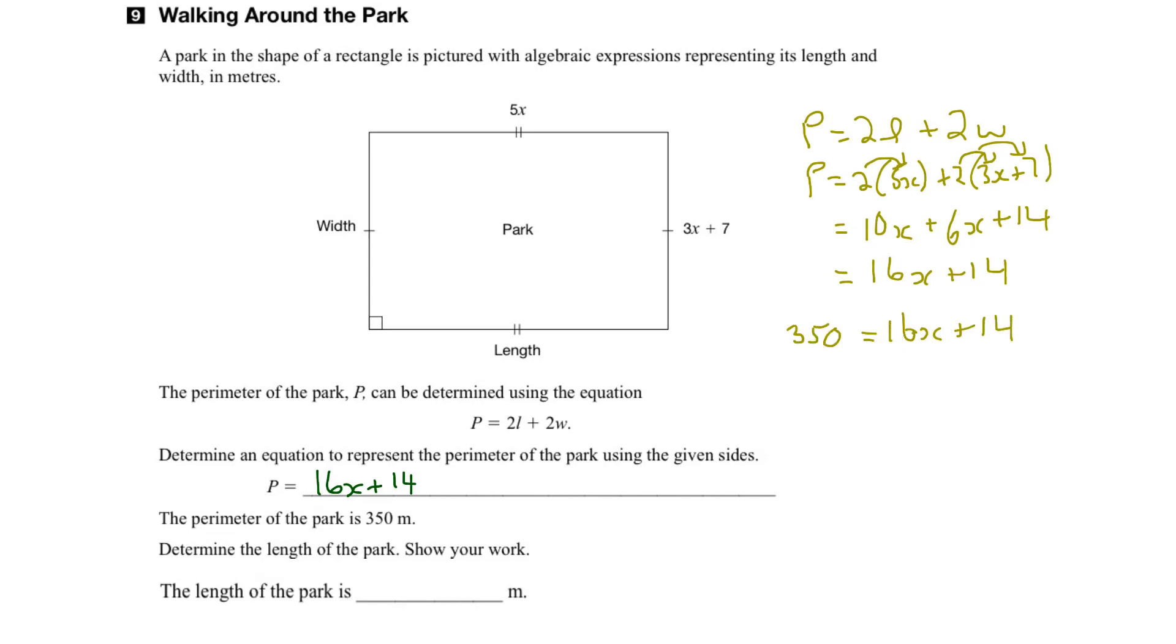To find the unknown variable x, we solve this equation. So the first thing to do is to isolate the x term. We're going to subtract 14 from this side, and also then on the other side.